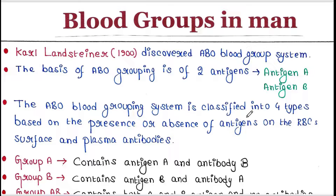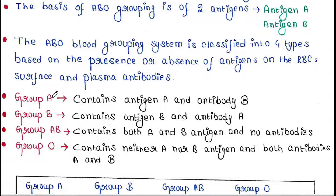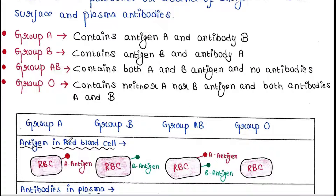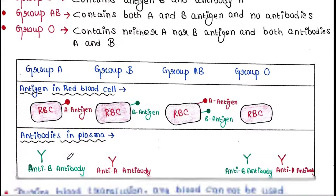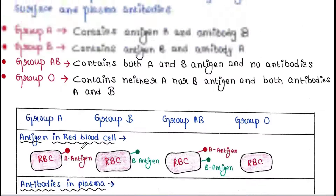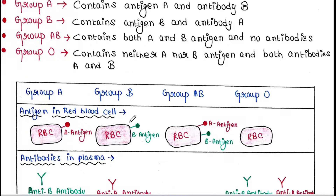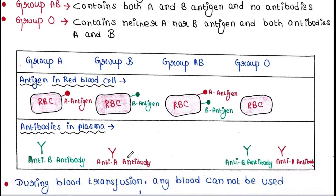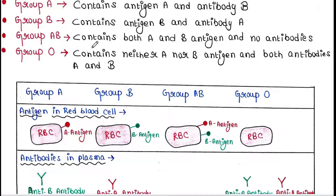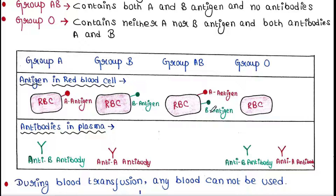The ABO blood grouping system is classified into four types based on the presence or absence of antigens on red blood cell surface and plasma antibodies. Group A people contain antigen A in their red blood cell and antibody B in their blood plasma. Group B people contain antigen B in their RBC and antibody A in their blood plasma. Group AB people contain both A and B antigens in RBC and no antibodies in blood plasma. Group O people contain neither A nor B antigen on RBC and both antibodies A and B in their blood plasma.